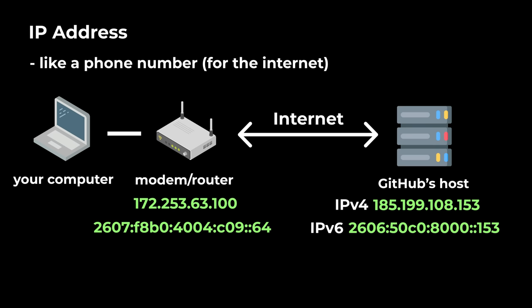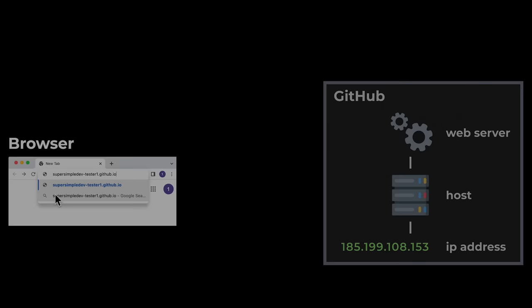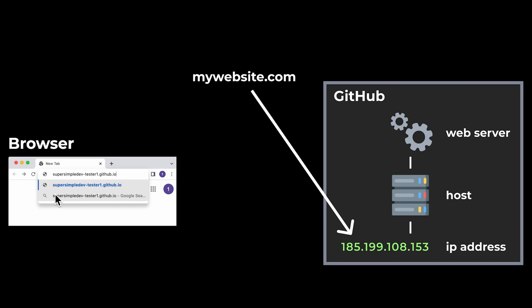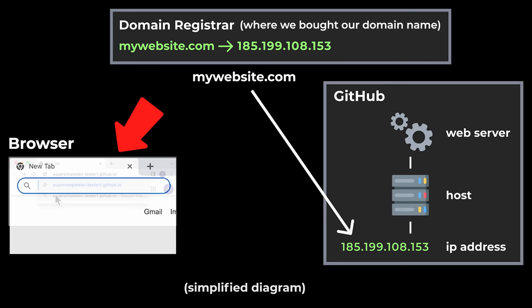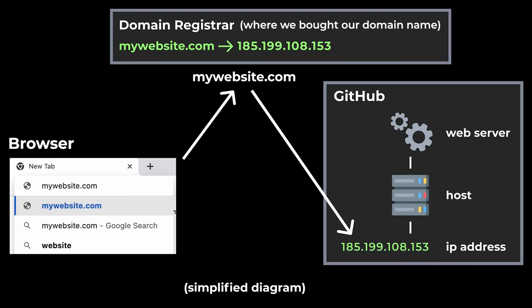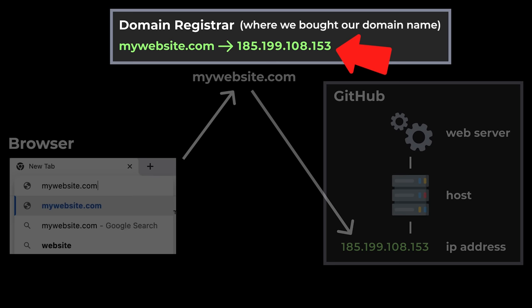An IP address looks something like this for IPv4, or something like this for IPv6. We have version 6 because we're sort of running out of IP addresses for version 4 — it's kind of like how we run out of phone numbers. The final piece to this puzzle is that we need to link our domain name to GitHub's IP address. We can set up a link between a domain name and an IP address inside our domain registrar. After we set this up, we type the domain name into our browser, and our browser contacts the IP address linked to that domain — basically contacting GitHub's host and web server. This link is called a DNS record, or a domain name system record. So now we're going to learn how to set up a DNS record inside our domain registrar.